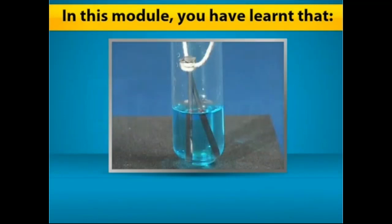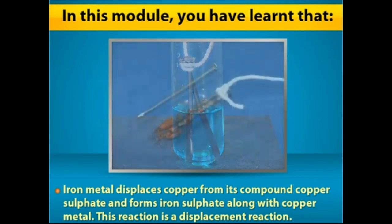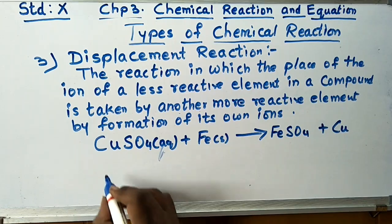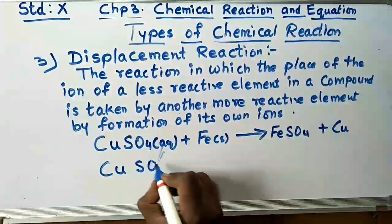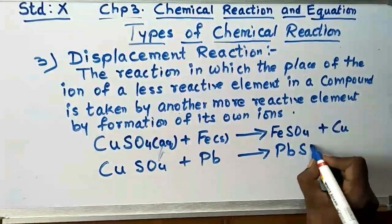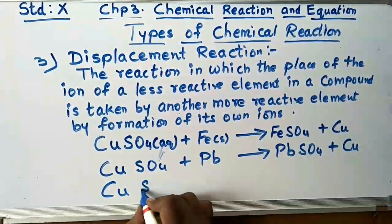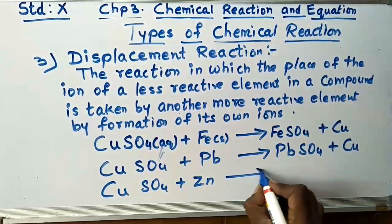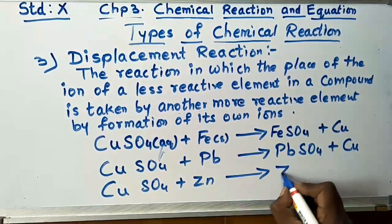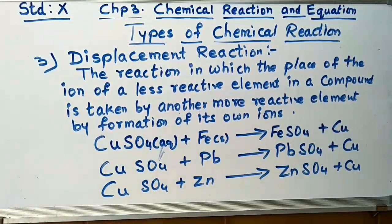In this reaction, iron metal displaces copper from copper sulphate and forms iron sulphate along with copper metal — a displacement reaction. More examples: CuSO4 + Pb (lead) gives PbSO4 + Cu. Also, CuSO4 + Zn (zinc): since zinc is more reactive than copper, it gives ZnSO4 + Cu. These are all called displacement reactions.